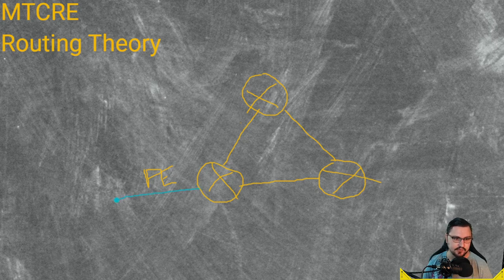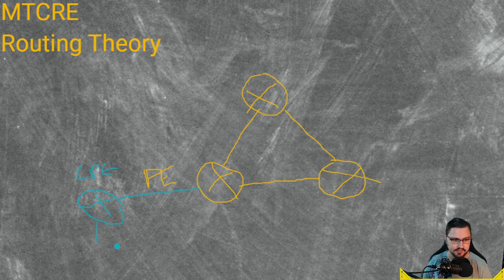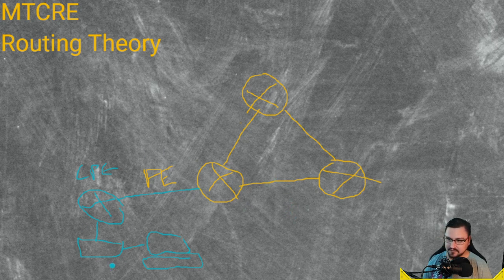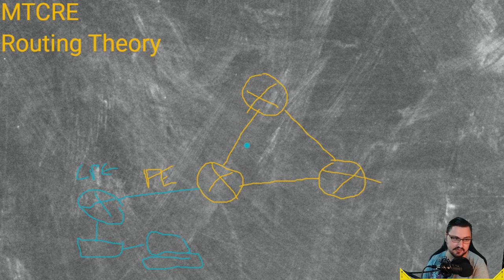The provider edge will form some type of connectivity to your customer or remote site, and from there we will also find a router or device which we call a CPE — short for Customer Premises Equipment. The CPE is just a router and it will then connect to some type of switch, and the switch connects to servers and computers. This is how we typically get internet access. I'm painting a specific scenario here because the customer and provider edge — this blue stuff — is what people are typically used to.